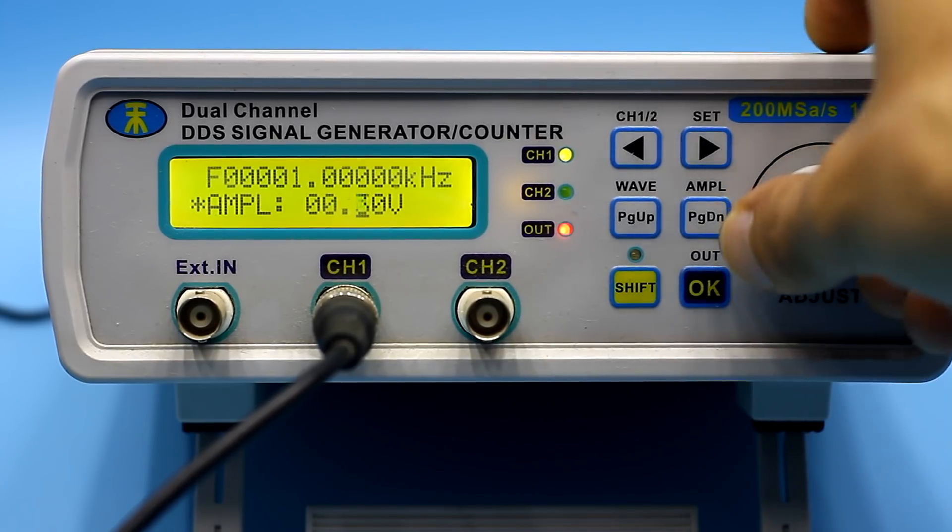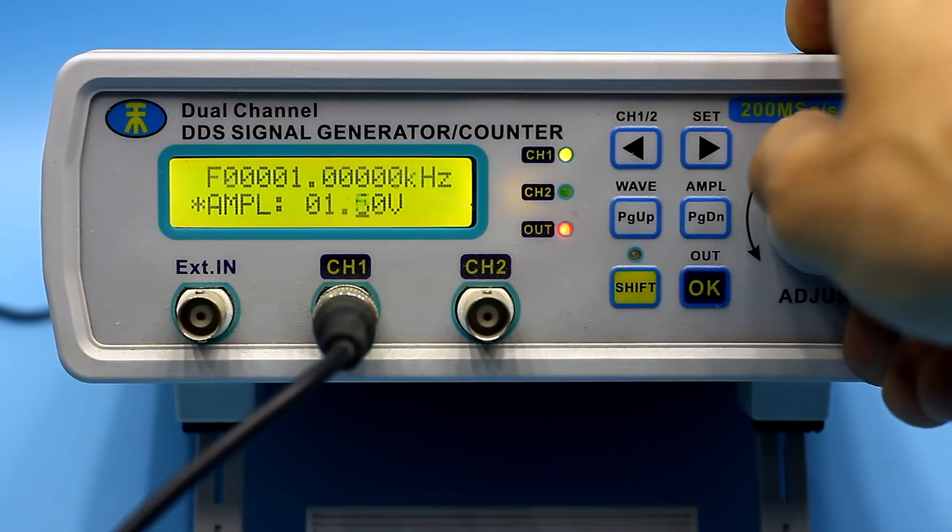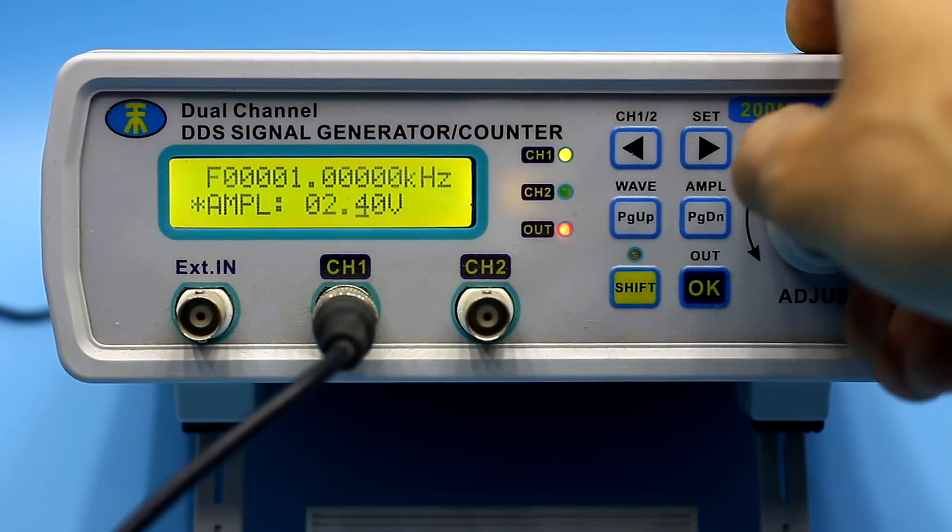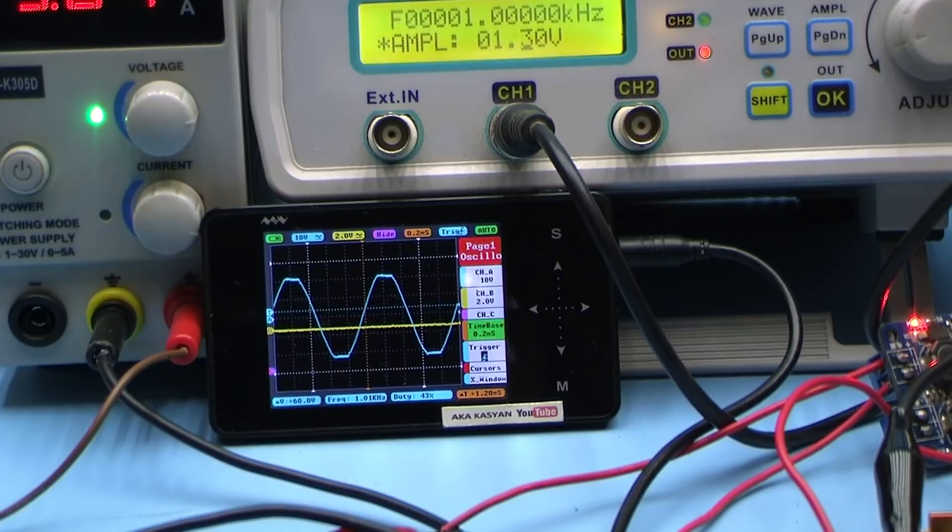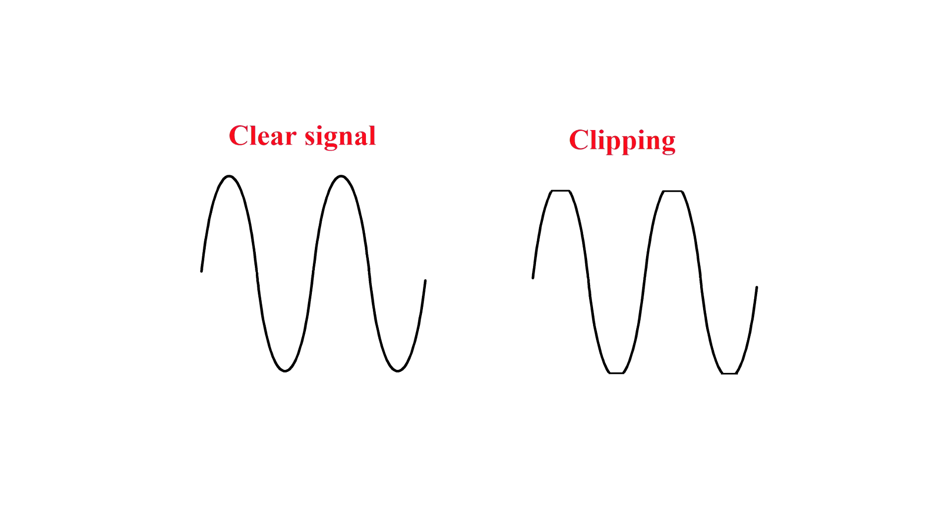Next, we will increase the amplitude or the volume of the input signal until we get the so-called clipping on the oscilloscope screen. This will mean that there is no point in increasing the amplitude anymore, since distortions have appeared.